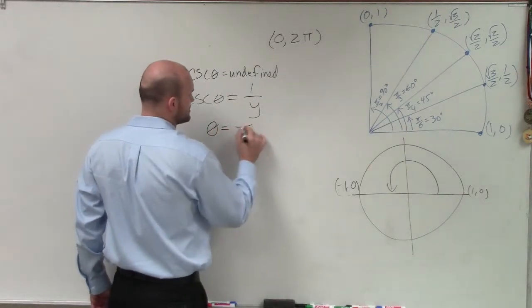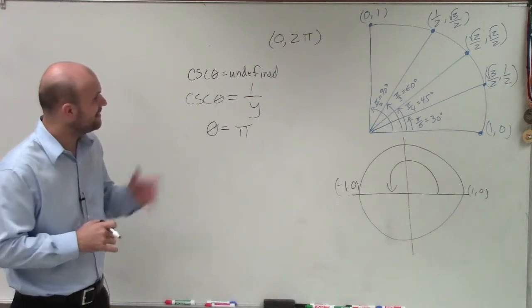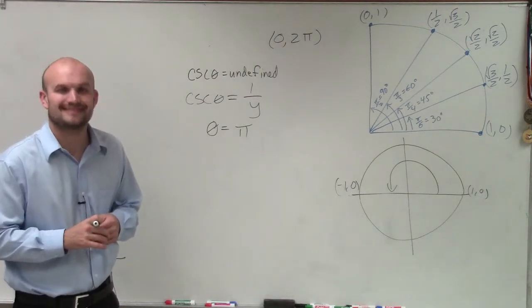Therefore, we know that theta equals the radian measure of π. So there you go, ladies and gentlemen. That is how you evaluate your trigonometric function. Thanks.